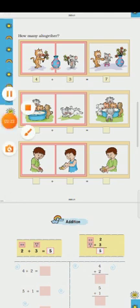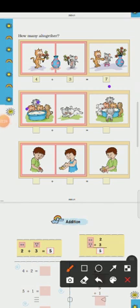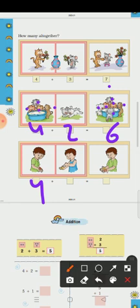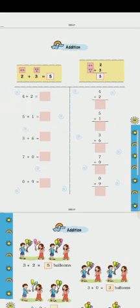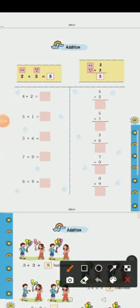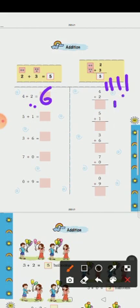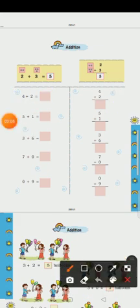4 plus 3, how many all together? Total how many all together? 1, 2, 3, 4, 5, 6, 4. How many all together? 1, 2, 3, 4, 5, 6.